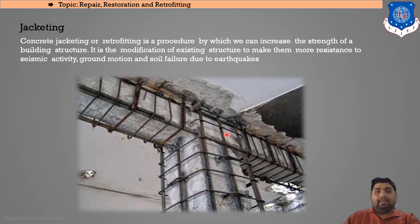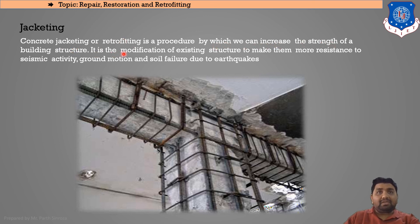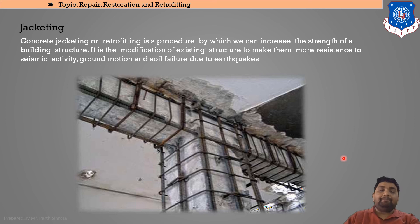Retrofitting generally means jacketing. An old deteriorating structure has steel bars reinforced around it to regain its original strength. Whenever steel bars are reinforced around any beam or column, this is termed jacketing. Concrete jacketing or retrofitting is a procedure to increase the strength of a building structure and make it more resistant to seismic activities.